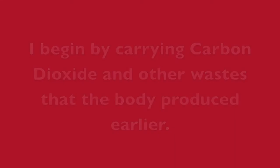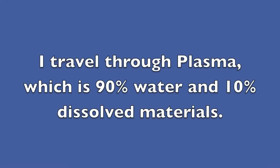Glucose is a sugar found in the body that is produced by the digestive system. How do I do that? I travel through the arteries and veins by flowing through plasma, a.k.a. my Batmobile. Plasma is made up of 90% water and 10% dissolved materials.